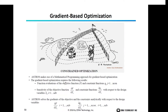The gradient-based optimization requires the following results: function evaluations of the objective function f and the constraint function g sub j, where j goes from 1 to the number of constraint functions. It also requires the sensitivities — the partial derivative of f with respect to x sub i, where i goes from 1 to the number of design variables, and the partial derivative of g_j with respect to x sub i. ASOS solves the gradient of the objective and constraint analytically with respect to the design variables, giving partial f partial x and partial g partial x sub i.